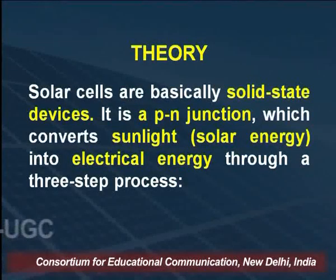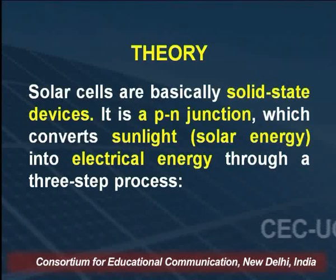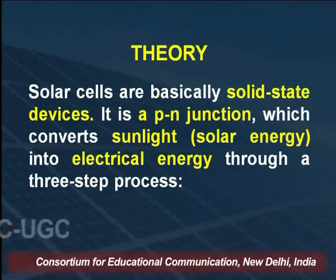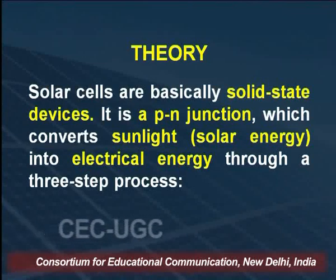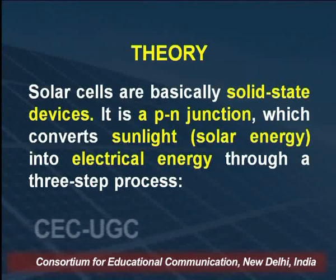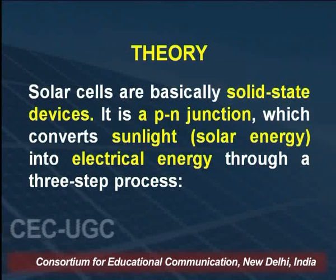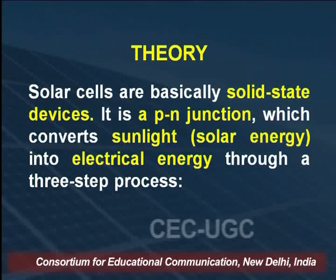We start with the theory of the solar cell. Basically, solar cells are solid state devices. These are p-n junctions which convert sunlight — as the name suggests, a solar cell converts solar energy into electrical energy. In the laboratory we use a lamp in place of sunlight. The solar cell is a device which converts solar energy into electrical energy through a three-step process.